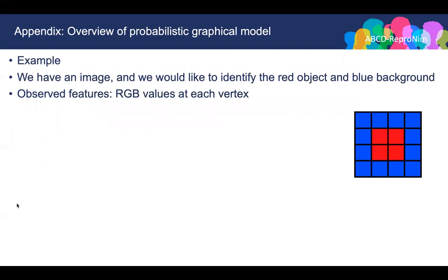In today's example, assume we have a 4x4 image. There are in total 16 pixels, and 4 pixels in the center are red. The remaining 12 pixels are blue. With this image, we have observed features, which are the RGB values at each pixel. For example, the RGB of this blue pixel is 0, 0, 1, and the RGB of this red pixel is different.